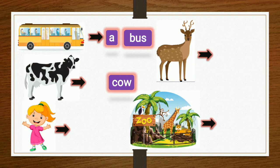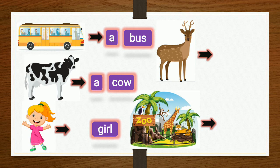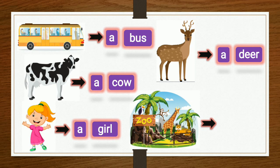Next is cow. The beginning letter is C, which is a consonant, so: a cow. Girl — the beginning letter is G, again a consonant, so: a girl. Deer — the beginning letter is D, so: a deer. Last one is zoo — the beginning letter is Z, again a consonant, so: a zoo.